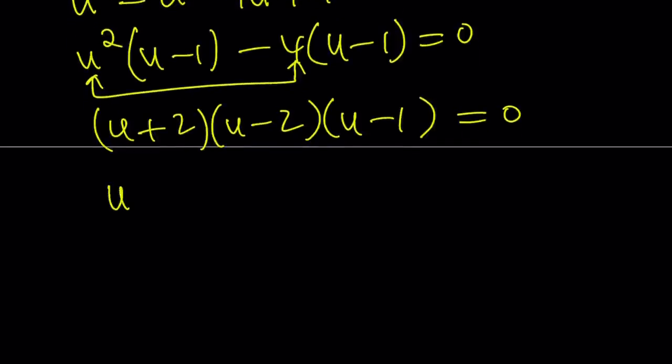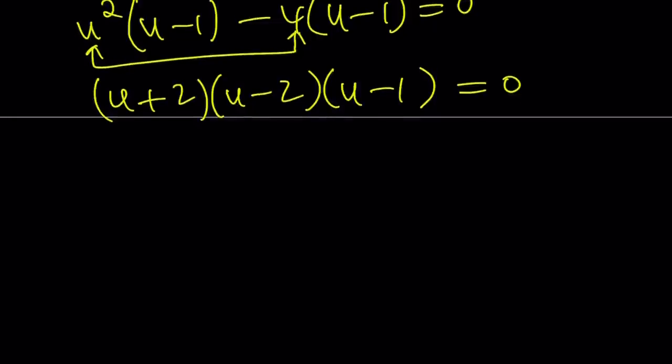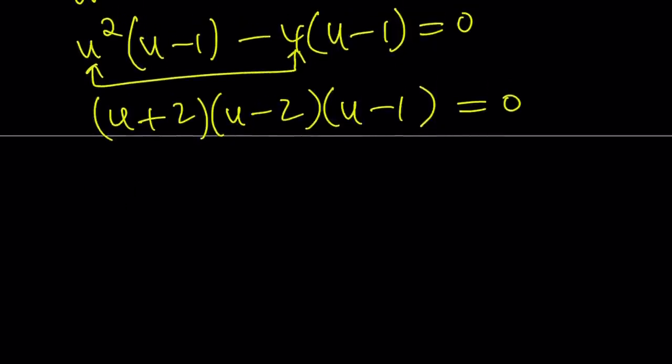u equals negative 2, u equals 2, and u equals 1. So since this is the equation whose solutions are u or x, y, z, then we can kind of write x, y, z. And I don't want to just worry about all the permutations, so I'm going to use the set notation.